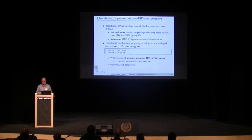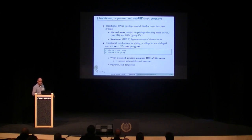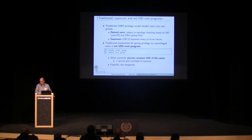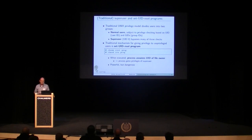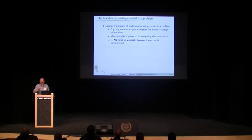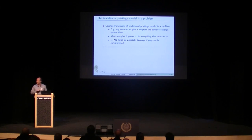Traditionally on Unix systems, the way you allow a program to operate with superuser privilege is to make it a set-user-ID root program: you change its ownership to root and turn on the set-user-ID bit. When a process executes that program, the effective user ID of the process changes to match the owner — superuser. This is obviously very powerful, but also very dangerous, because if the process gets compromised it can do all the bad things that superuser can do. Either you're unprivileged, or you have all privileges — there's nothing in between.